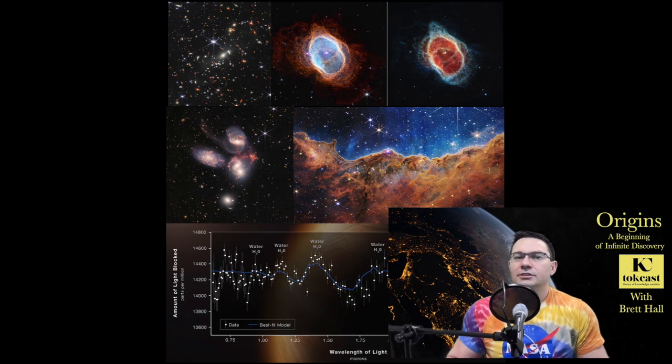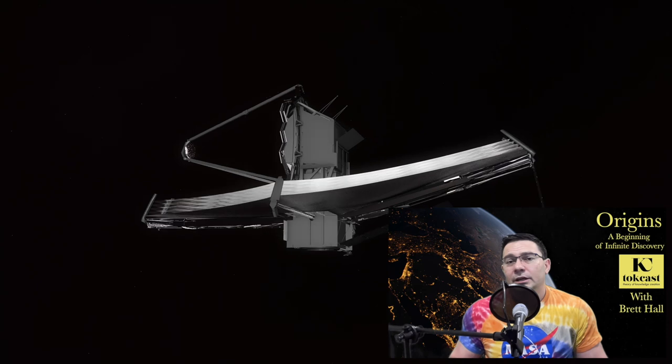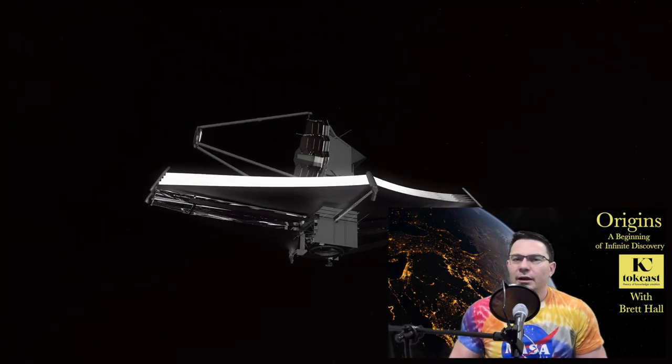Today, NASA released five images, the first five images from the James Webb Space Telescope. A telescope that is not on Earth or even strictly in orbit exactly around the Earth, but rather in orbit around the Sun.